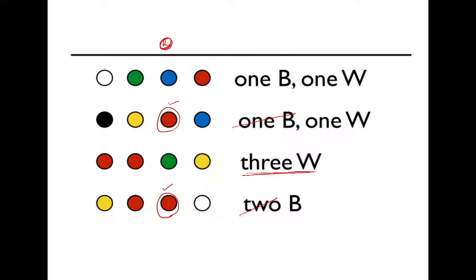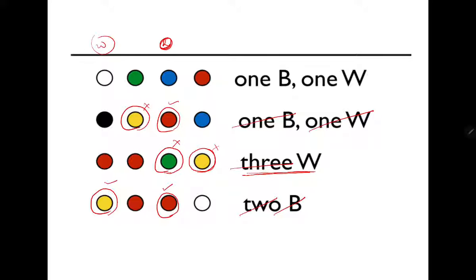Assuming there is only one red — because if you try two reds you will see that there is some conflict — it means that there might be yellow and green in the secret code. If yellow is there at the wrong position, it means I can choose the yellow which is at the correct position, and one more B is accounted for. Here also there is a yellow; yellow is in the answer but at the wrong position, so that is gone.